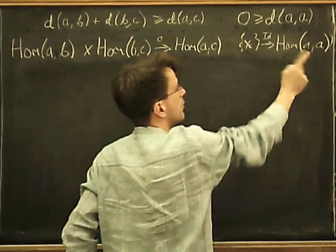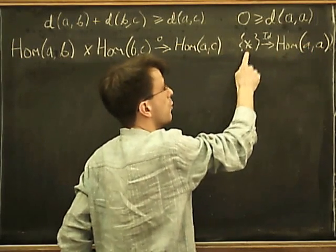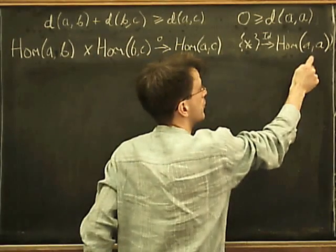And we've also got the notion of the identity in each endo-homset. From the homset from A to A, we have the identity map, which we can write as a set map from the one object set into that.